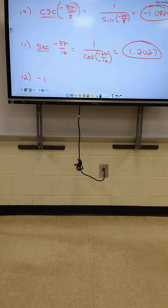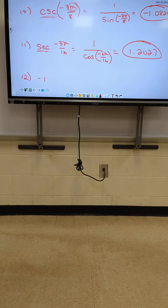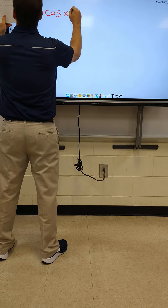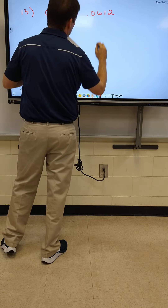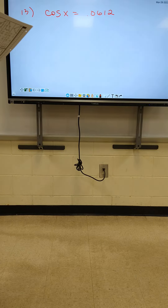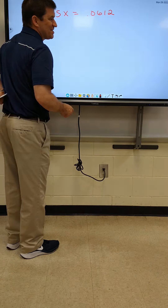Everybody reset your calculator or put it back in degree mode for the last six problems. Hit mode, degree, enter — put it back in degree mode to do the last six at the bottom. Everybody read your instructions. It says: use a calculator to find the value of x in degrees, minutes, and seconds.